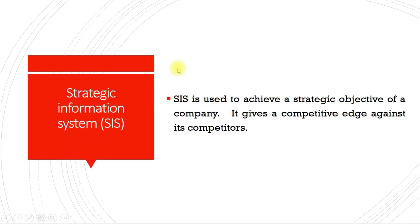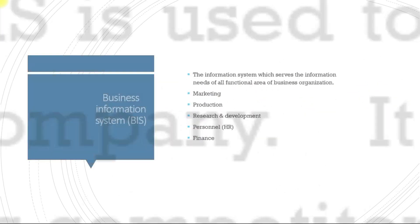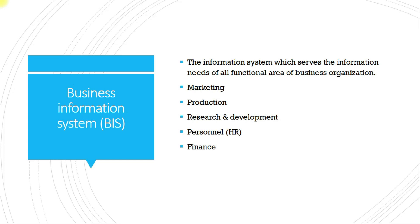Strategic information system, shortly known as SIS, is used to achieve the strategic objectives of a company and gives a competitive edge against its competitors. Business information system, shortly known as BIS, is the information system which serves the information needs of all functional areas of a business organization — that is, marketing, production, research and development, and personal finance.